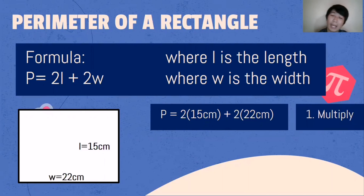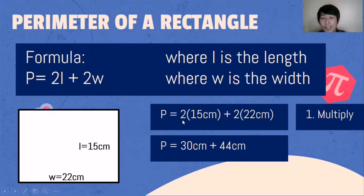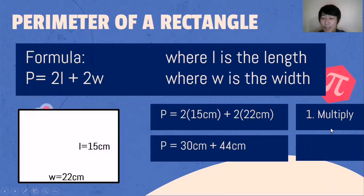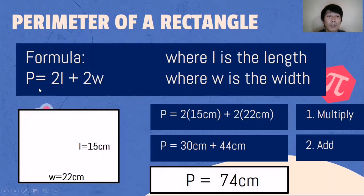The first step is to multiply. 2 × 15 cm = 30 cm, and 2 × 22 cm = 44 cm. The second step is to add: 30 cm + 44 cm = 74 cm. The perimeter of the rectangle is 74 centimeters. The formula for the perimeter of a rectangle is 2 × length + 2 × width.